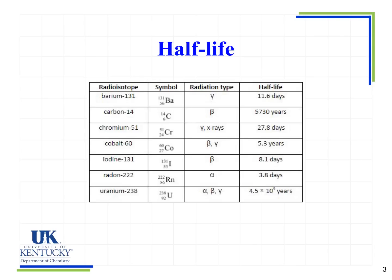Uranium-238 emits alpha, beta, and gamma radiation and has a half-life of 4.5 billion years. Again, this information has to be given or something that helps you find it — you do not need to memorize these values.